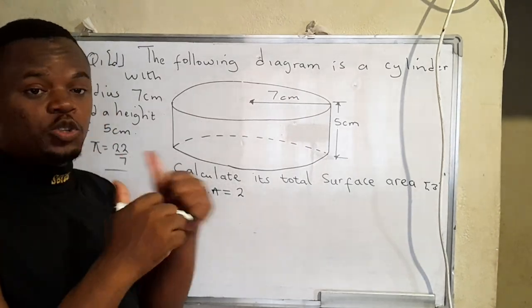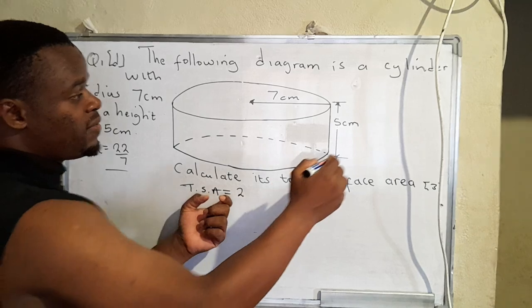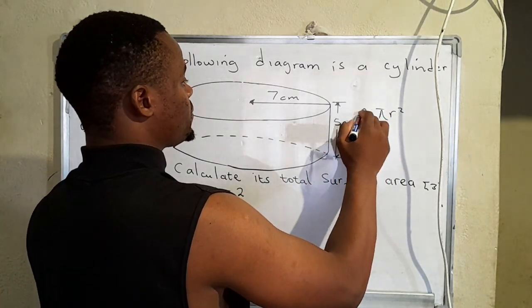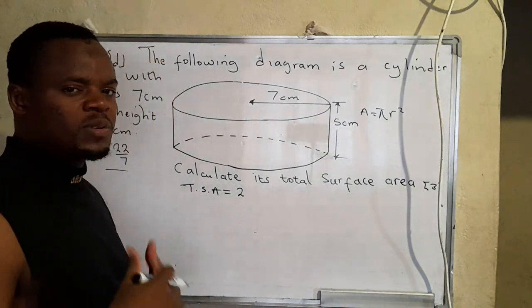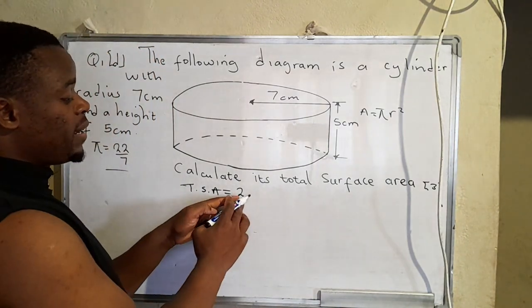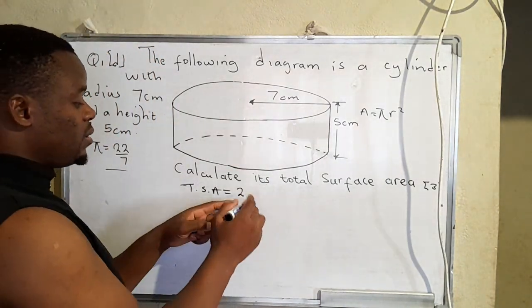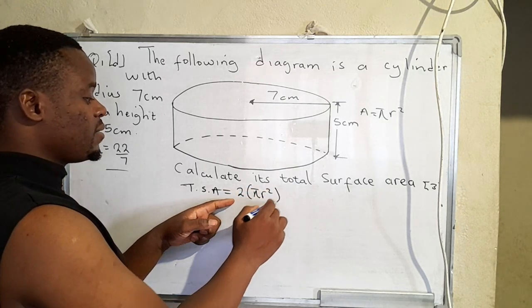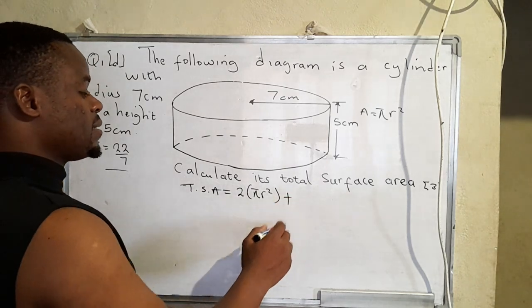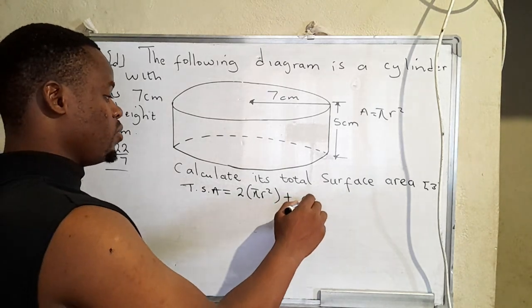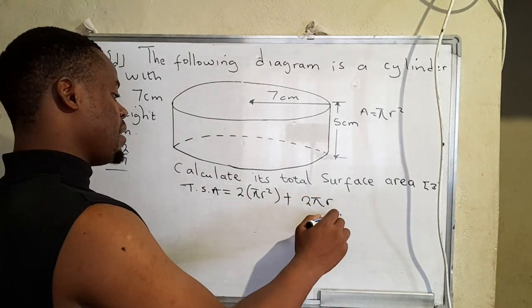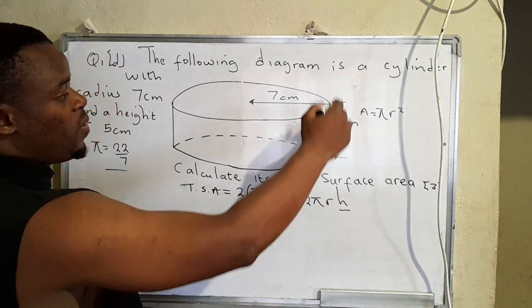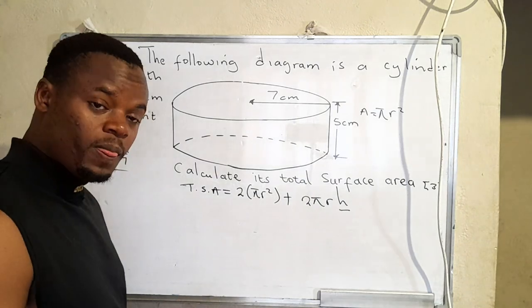So now since there are two circles, the area of the circle is actually given by pi r squared. So because there are two, we are going to multiply by 2, 2 times pi r squared then plus 2 pi r h. So h stands for the height.